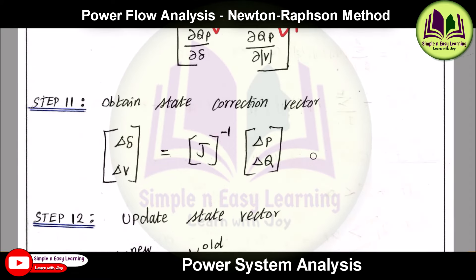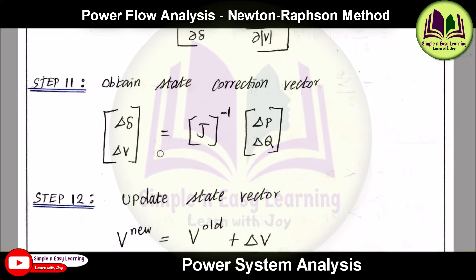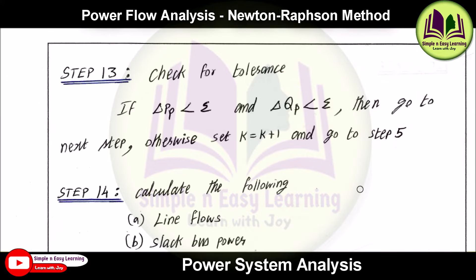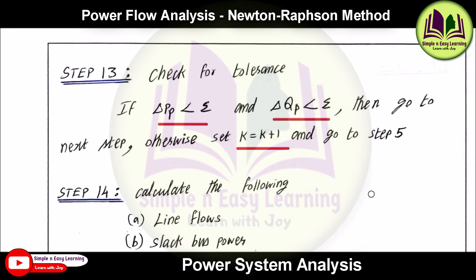Step 10: obtain the state correction vector — [delta_delta, delta_V] = J_inverse * [delta_P, delta_Q]. Step 11: update the state vector — new voltage = old voltage + delta_V; delta_new = delta_old + delta_delta. Step 13: check tolerance — if delta_Pp < epsilon and delta_Qp < epsilon, go to the next step and print the result; otherwise increment k = k+1 and go to step 5, repeating until convergence.